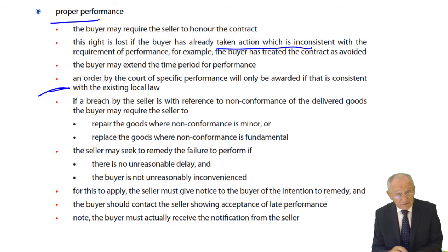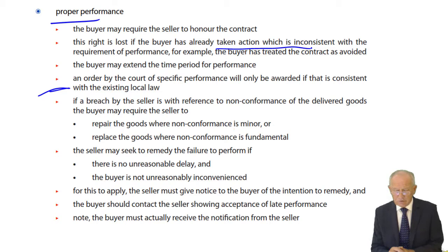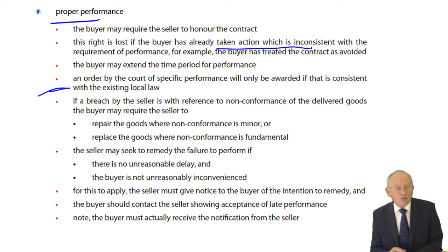The buyer can extend the time period. We have a time period within which the seller has to deliver the goods, and the seller says it's become impossible for me to deliver on time. The buyer can say: I understand you've got a problem. Instead of delivery within two months, which expires next week, I'll give you another two months on top of that. So the buyer may extend the time in order to allow the seller to conform and perform proper performance.